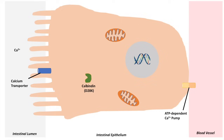When we look at an enterocyte in the small intestine, on the left we can see the intestinal lumen. Say you've absorbed or ingested some calcium in your diet — the basic process of calcium absorption goes like this: calcium is brought into the enterocyte through a calcium transporter.